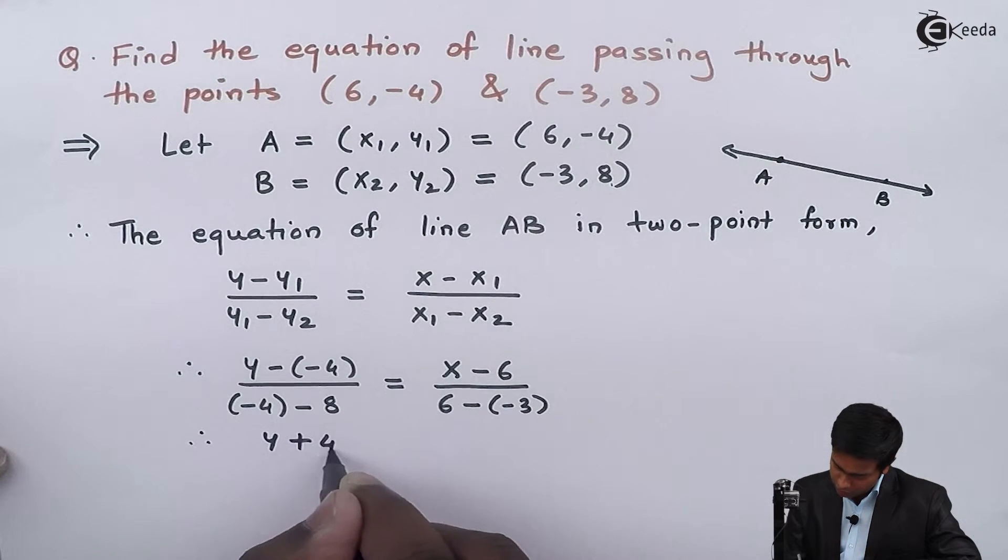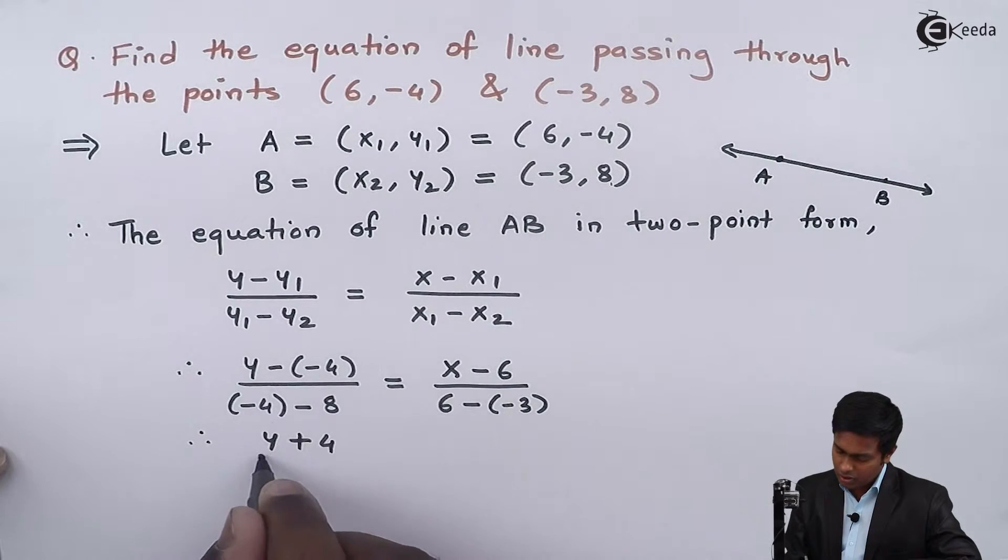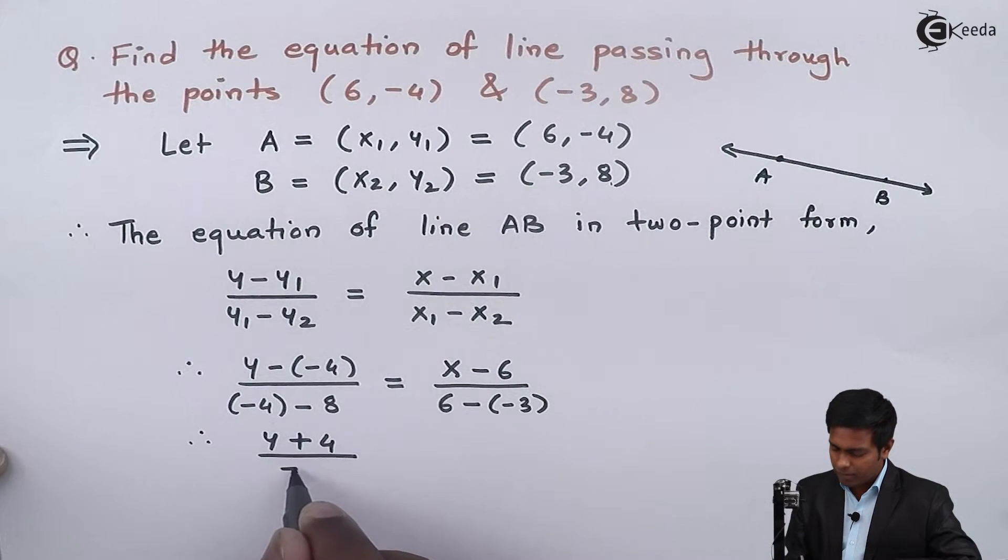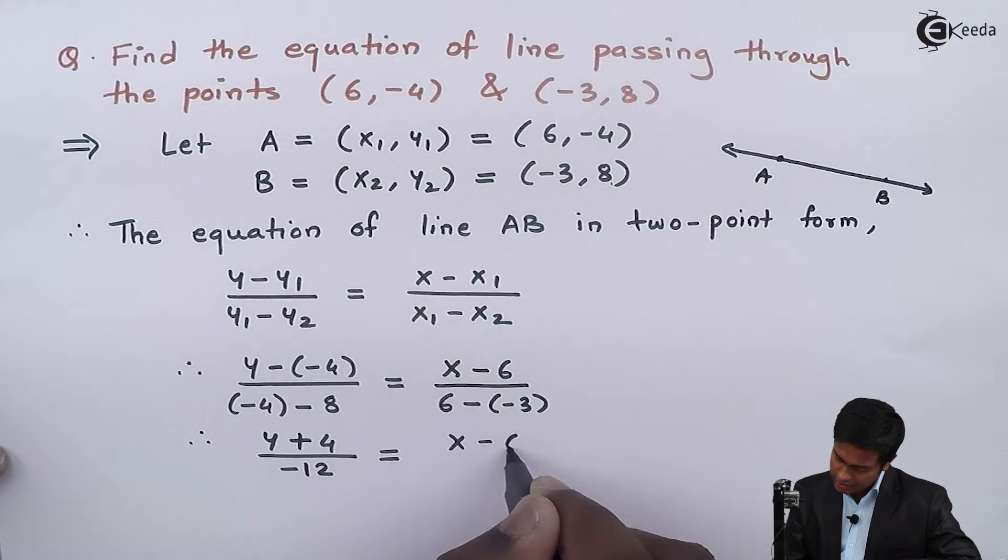By simplifying, we get (y + 4)/(-12) = (x - 6)/9.